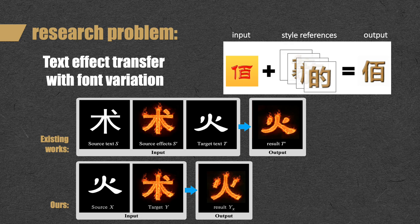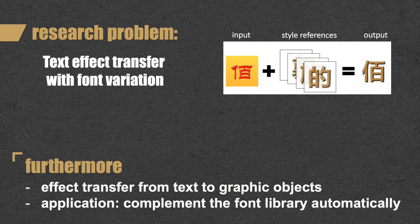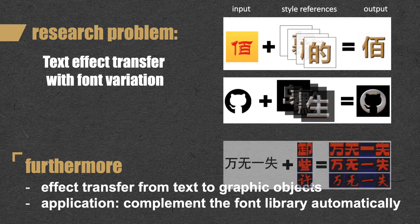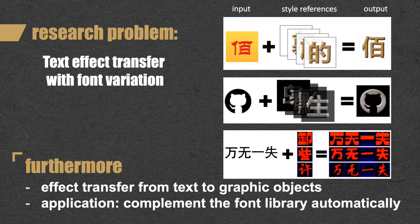Since there is no need to build an analogy, compared with existing methods, our method only requires two inputs. Furthermore, our method can robustly transfer effects from text to graphic objects. In addition, we also have an application to reduce the label cost for font designers.